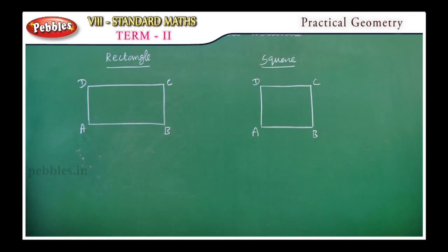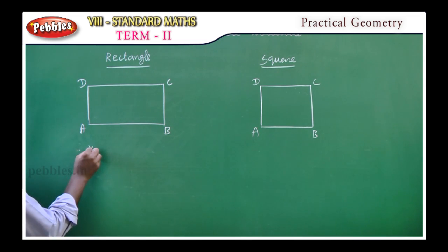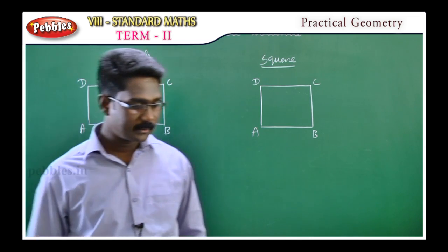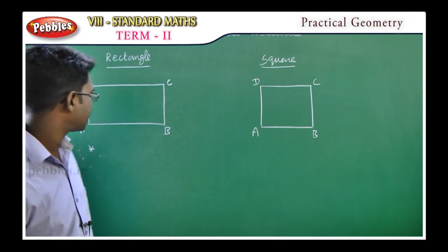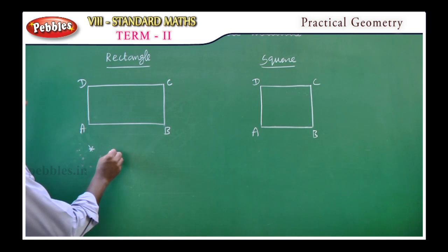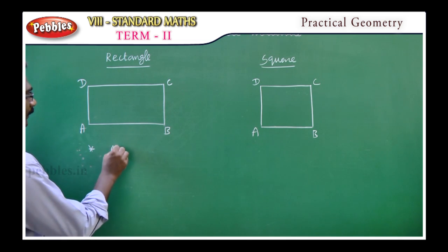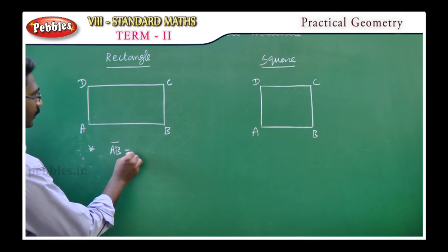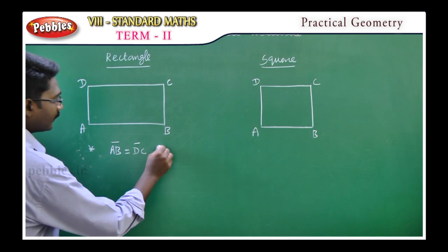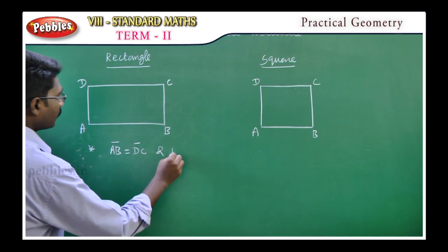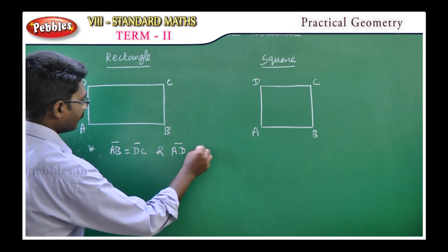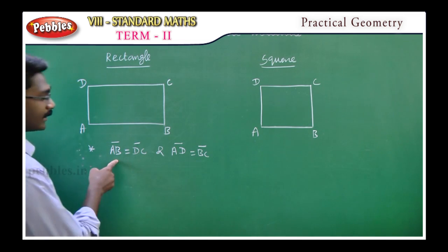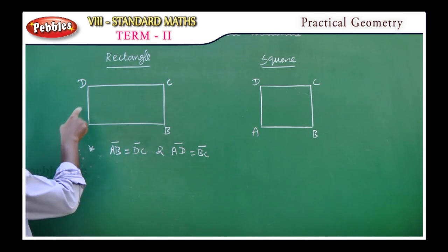That is a rectangle. So, what is the property? First property: the opposite sides are equal. Here, line segment AB is equal to line segment DC, and also line segment AD is equal to line segment BC. This is the meaning — the opposite sides are equal.